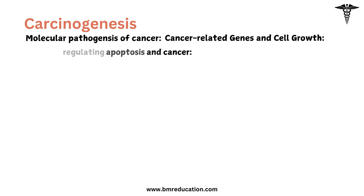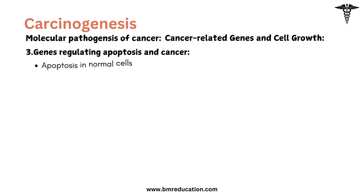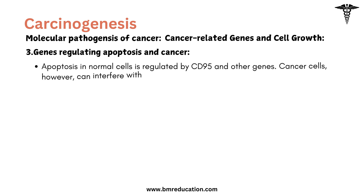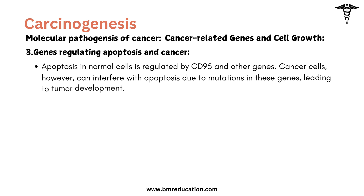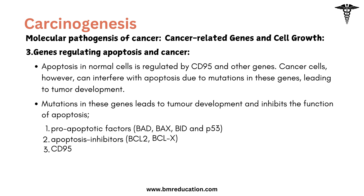Next, genes regulating apoptosis in cancer. Apoptosis in normal cells is regulated by CD95 and other genes. Cancer cells, however, can interfere with apoptosis due to mutations in these genes, leading to tumor development.